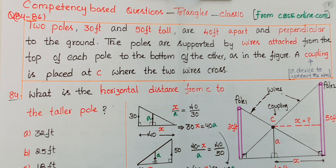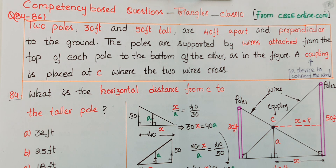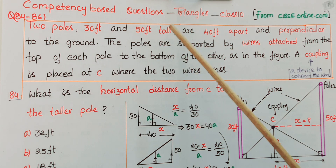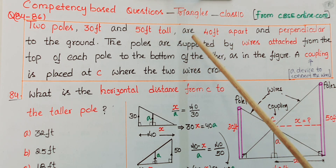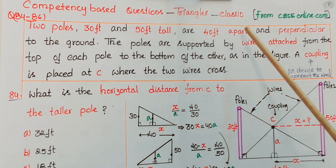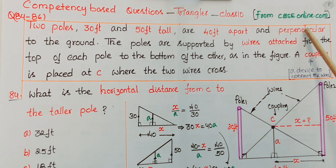Hello everyone, today I am going to explain how to do competency-based questions from the Triangles chapter, Class 10. These are from cbseonline.com. The problem is: two poles 30 feet and 50 feet tall are 40 feet apart.